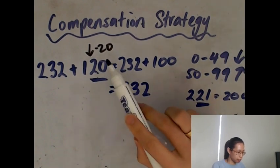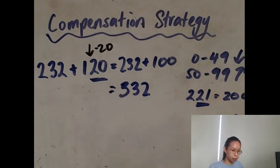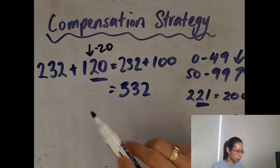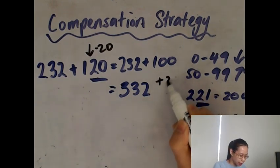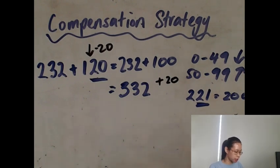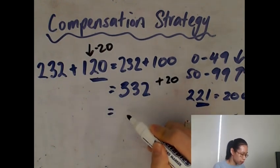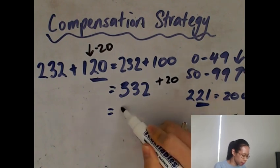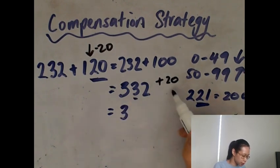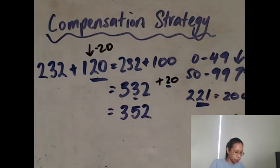Now because we have a minus 20 to the nearest hundred, we are going to compensate for that and plus 20. So now we are going to do 332 plus 20 is 352. And there you go. That's your compensation strategy with 3 digit plus another 3 digit.